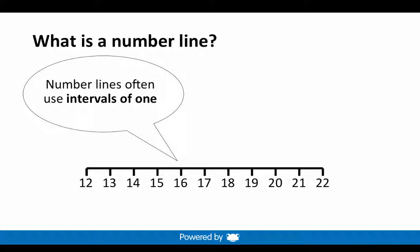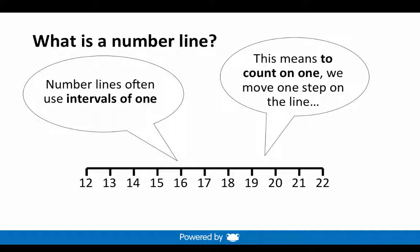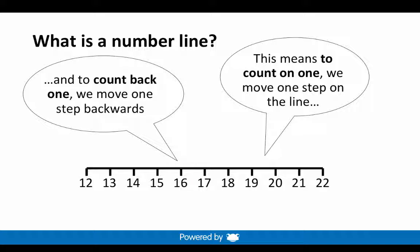Number lines often use intervals of 1. This means to count on 1, we move on one step on the line. And to count back 1, we move one step backwards.